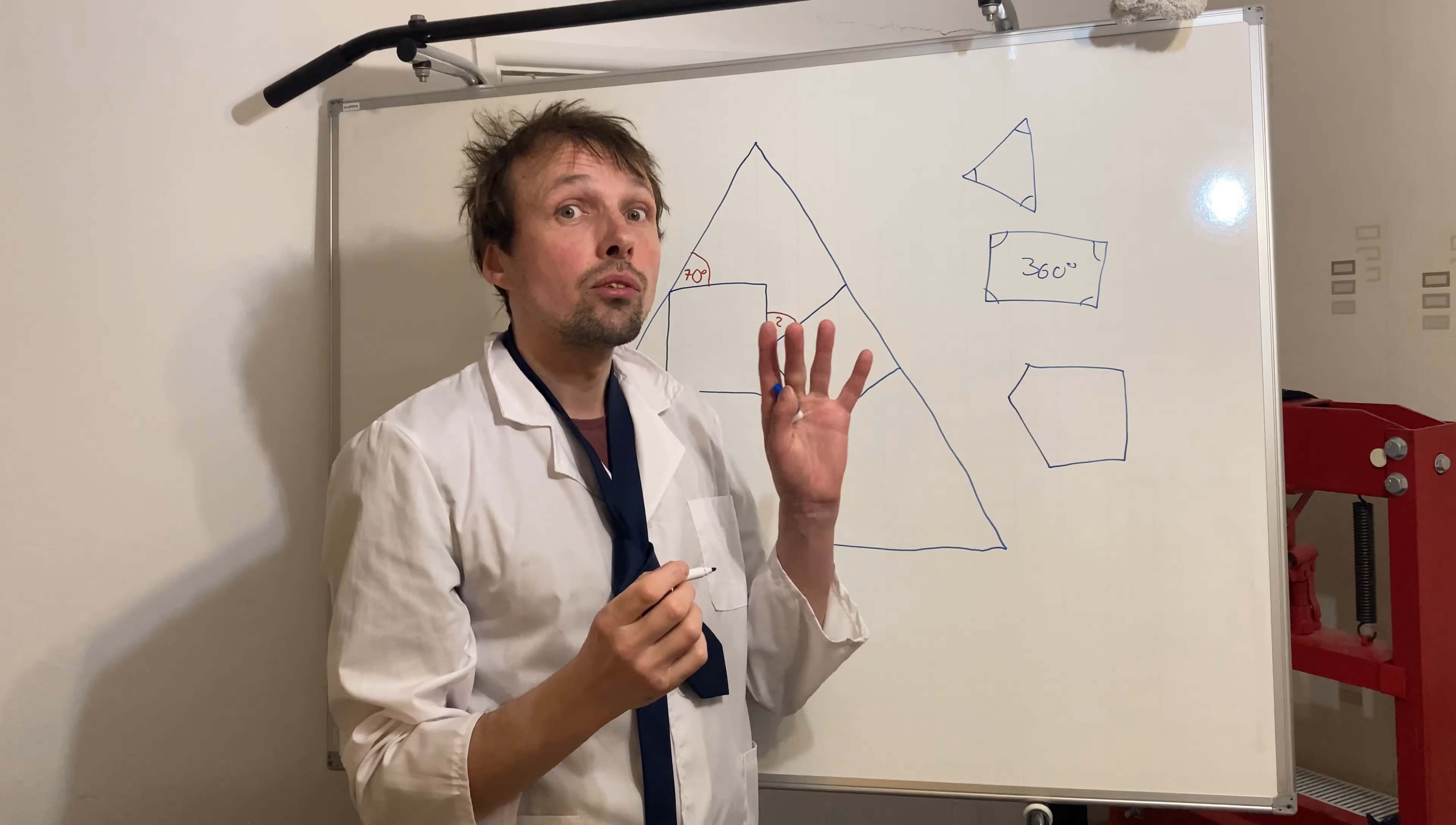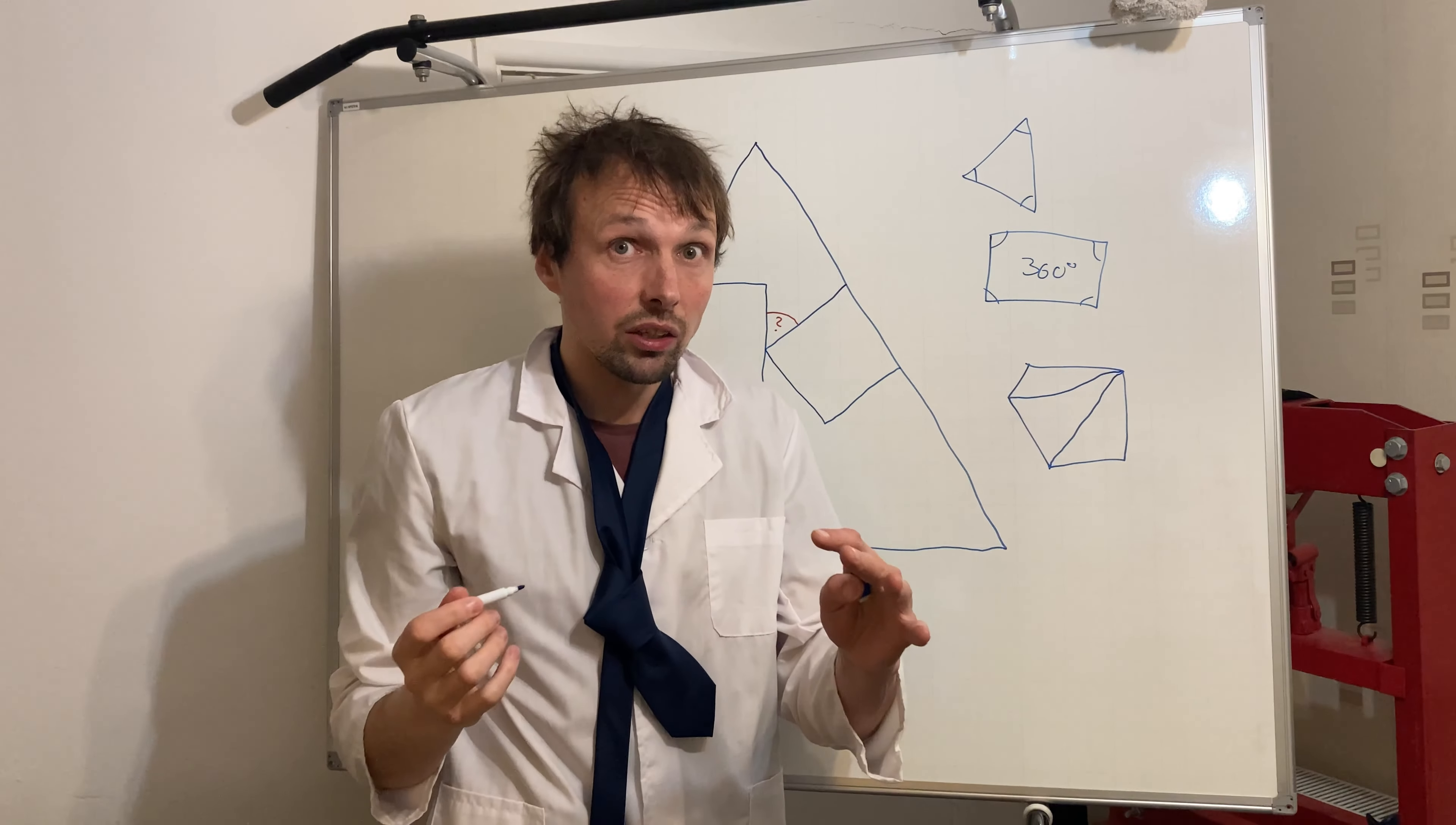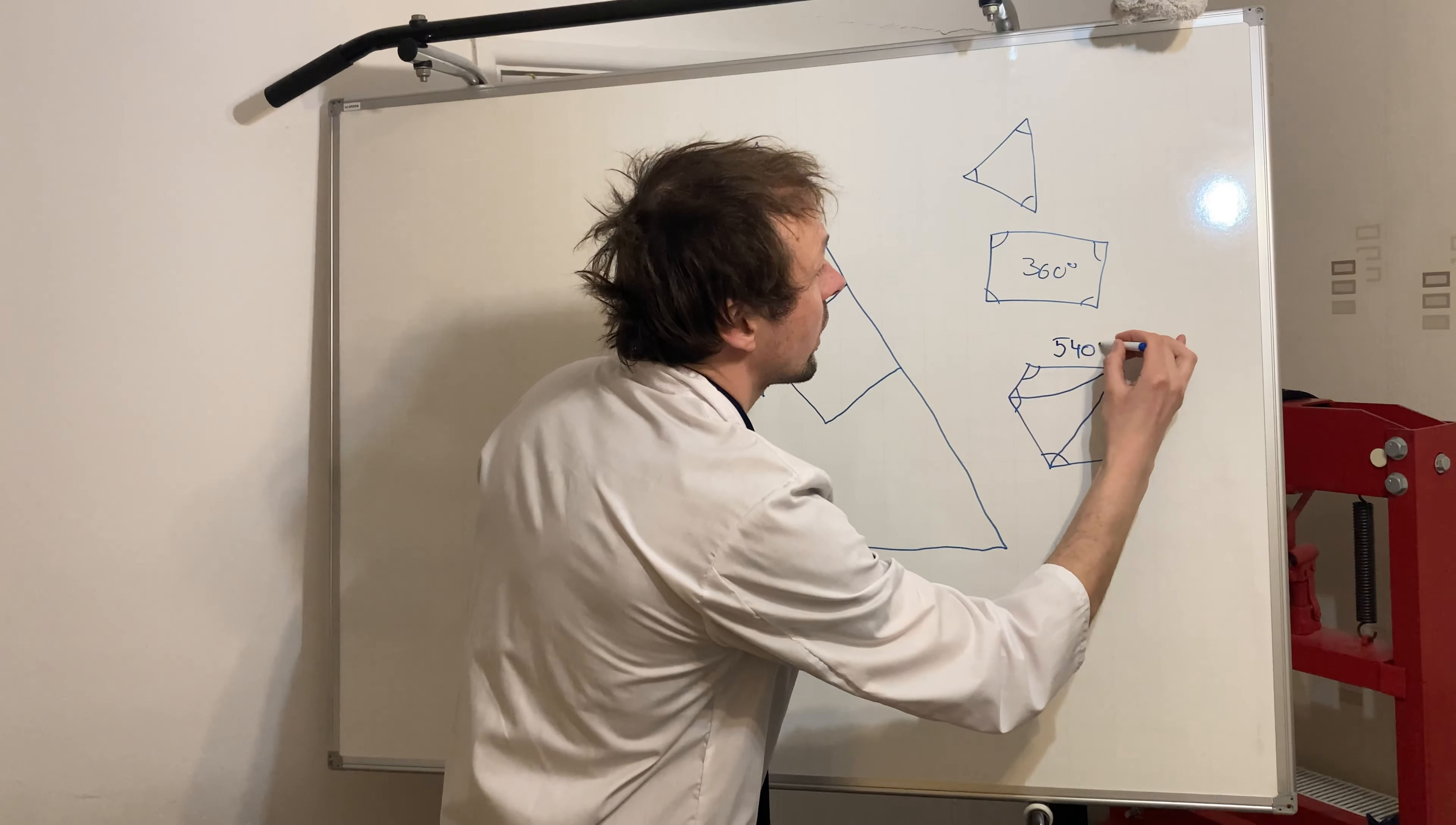So now if we have a pentagon, always the sum of all the angles is going to be 540 degrees. You might wonder how I got this. Very simple, you can actually divide a pentagon into three triangles like so. And so now as you know, like each triangle has 180 degrees total sum, so now if you add all of those angles together, then you're gonna get 540 degrees.